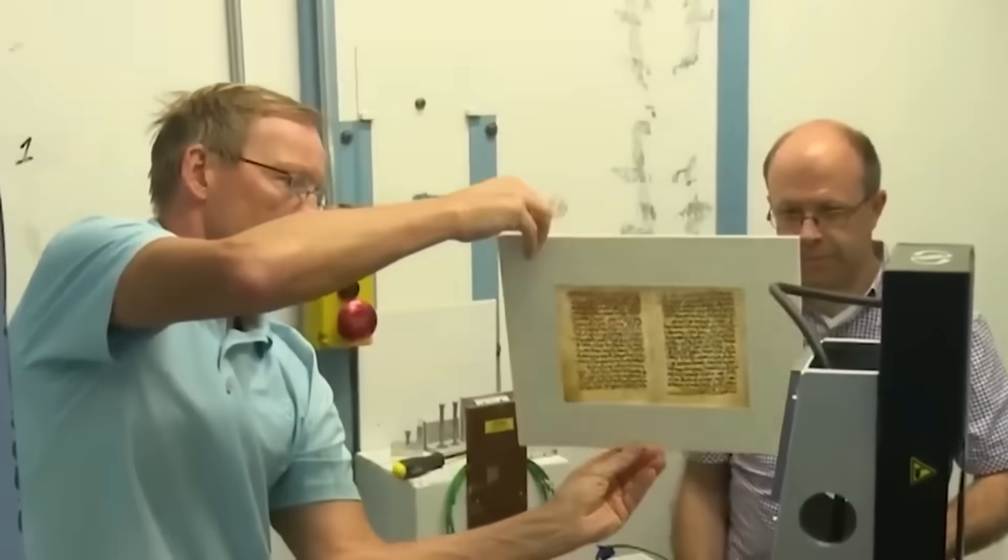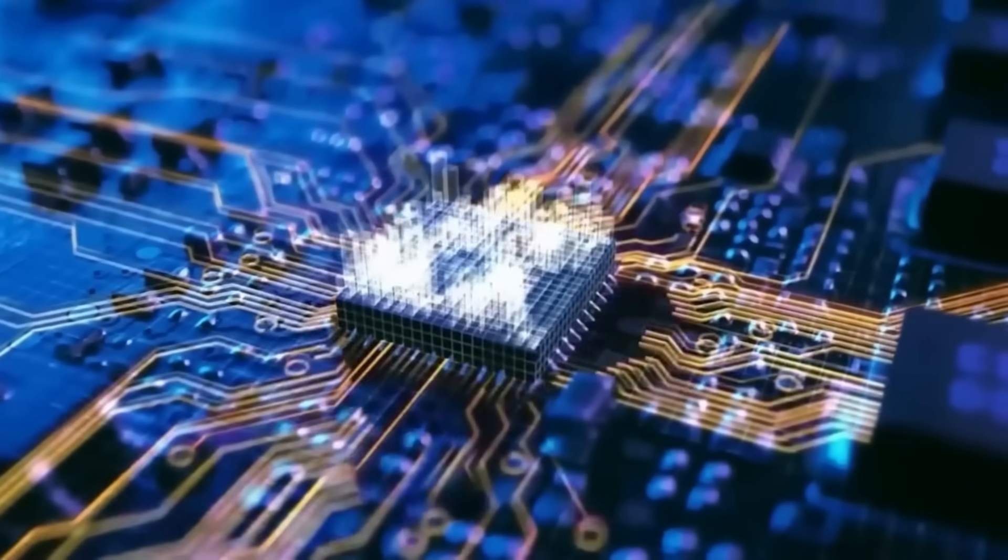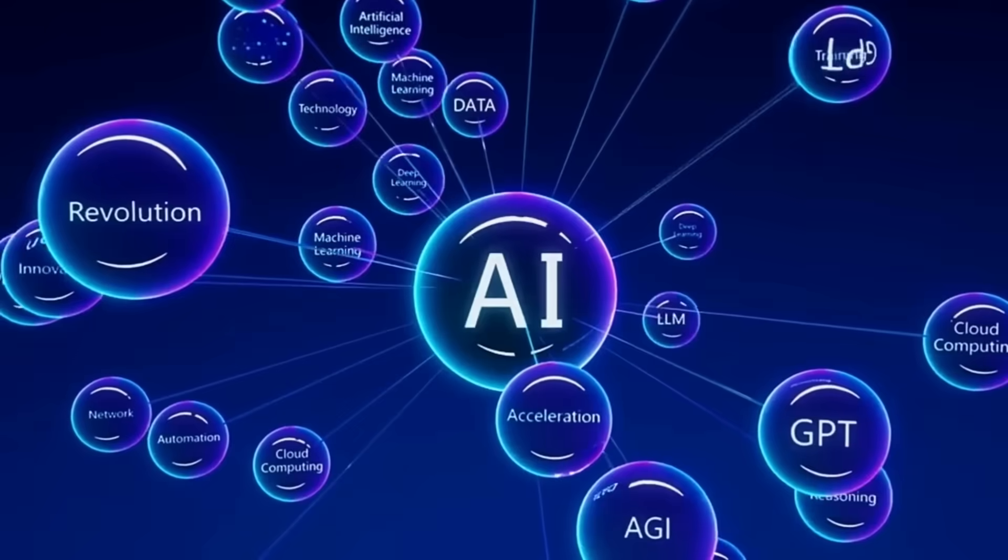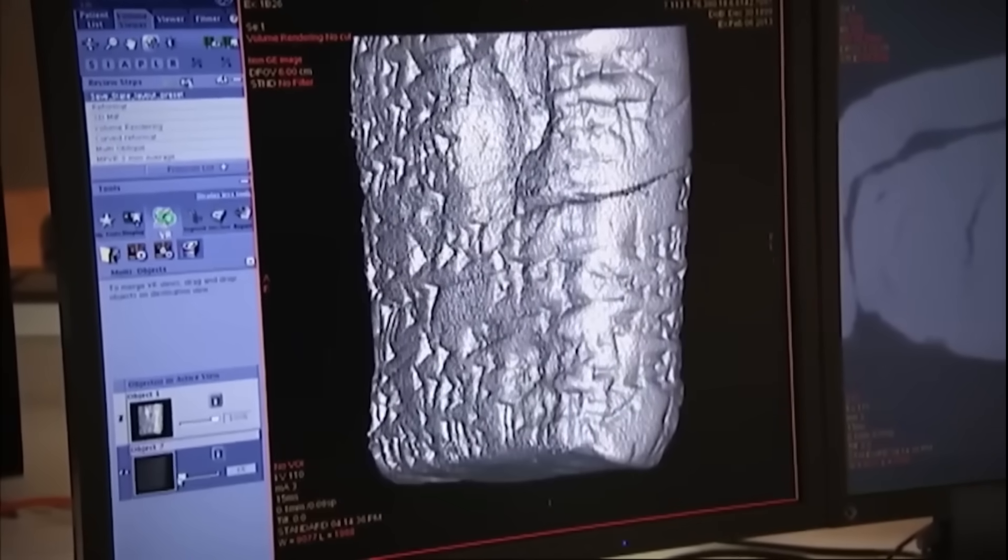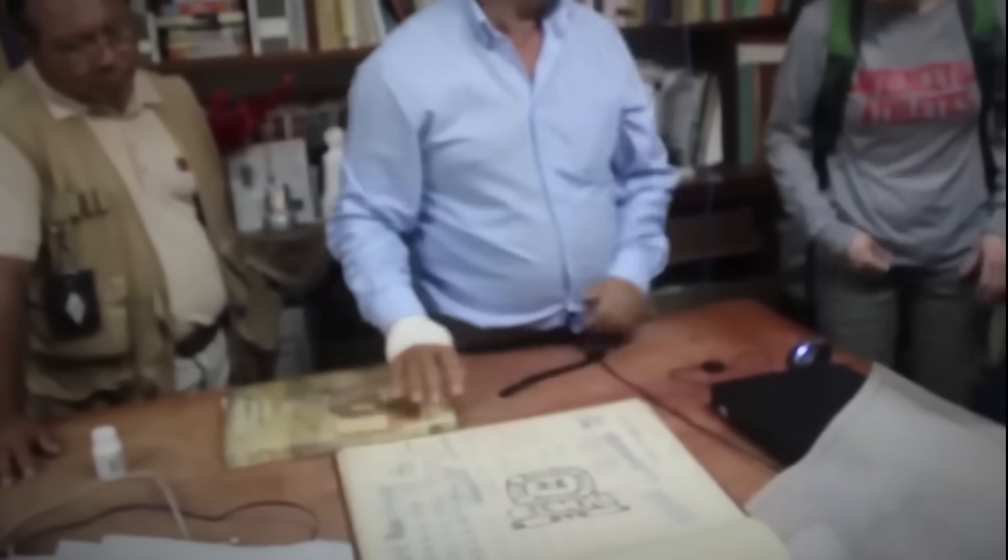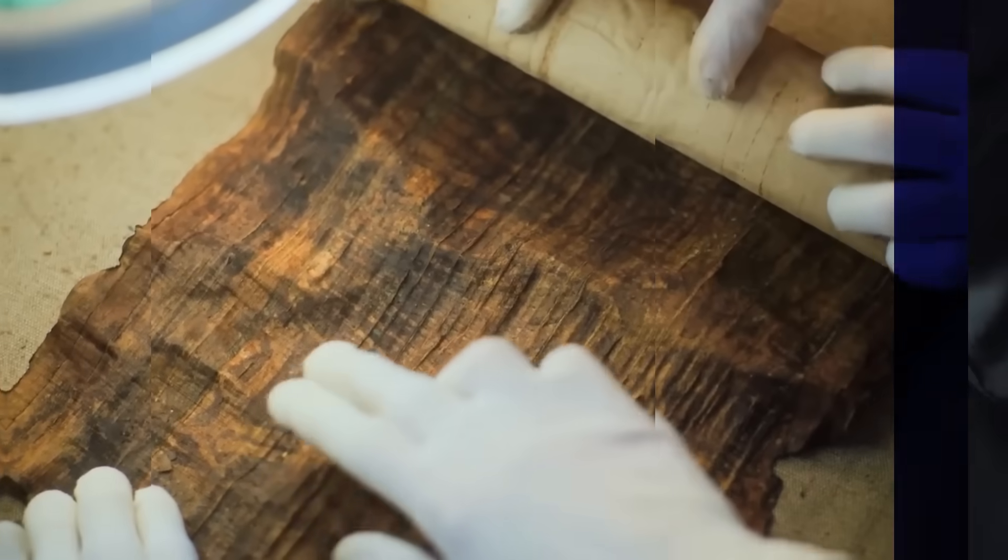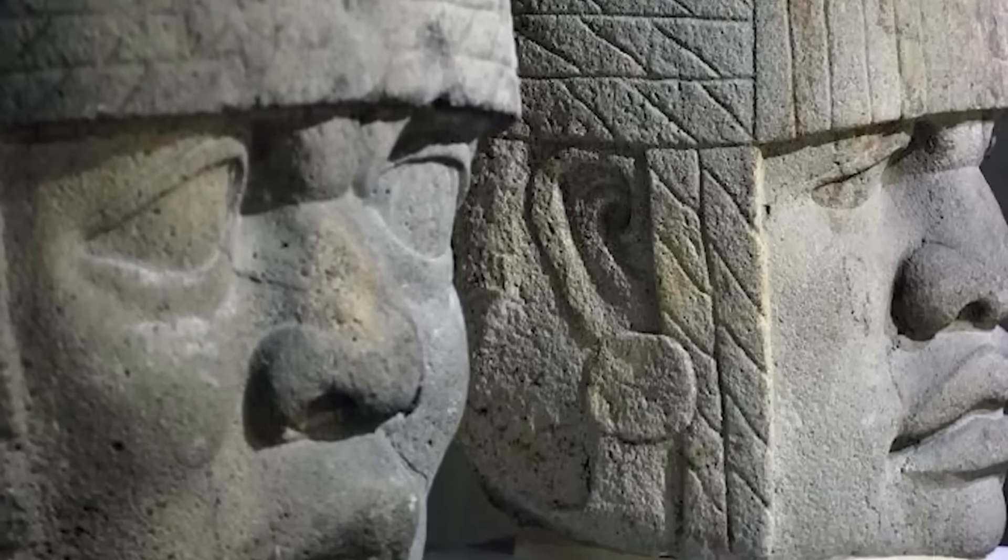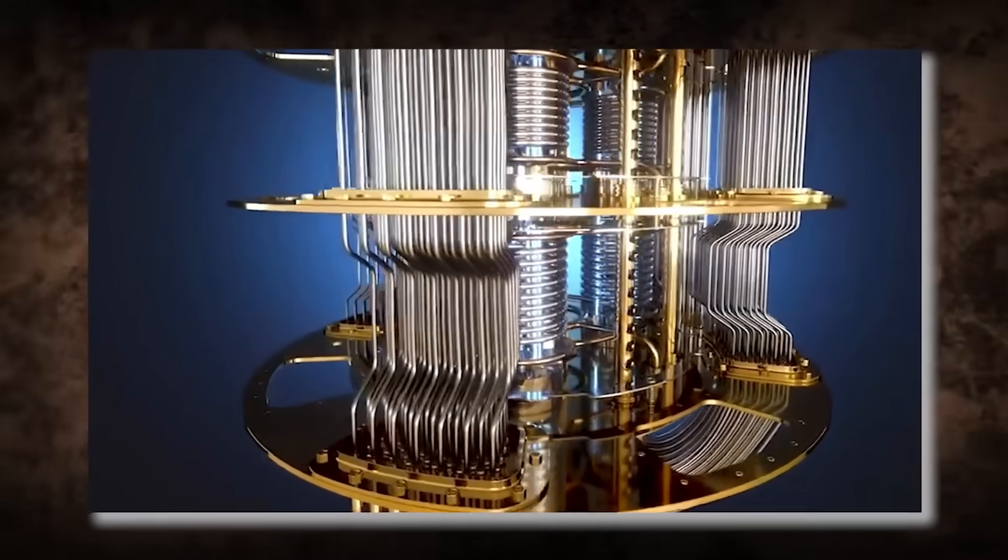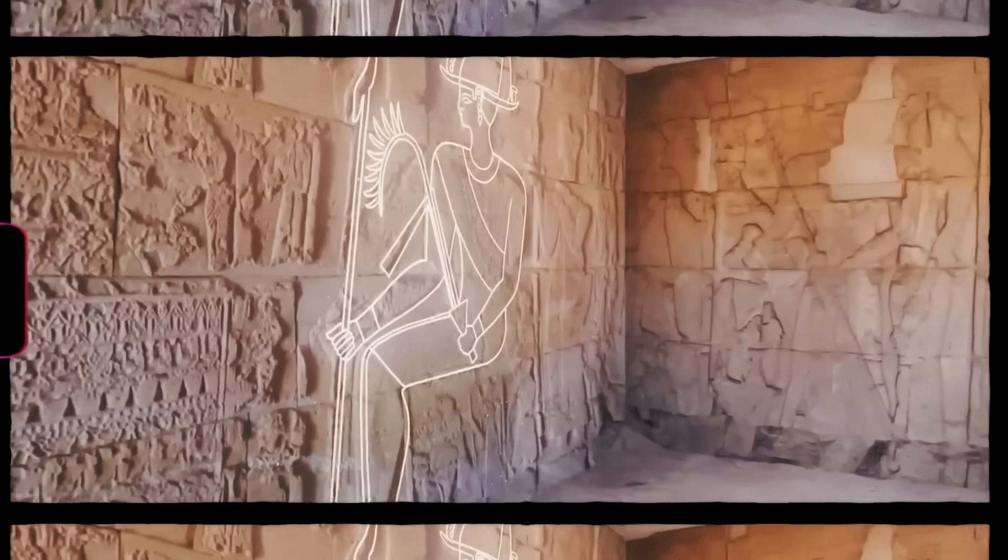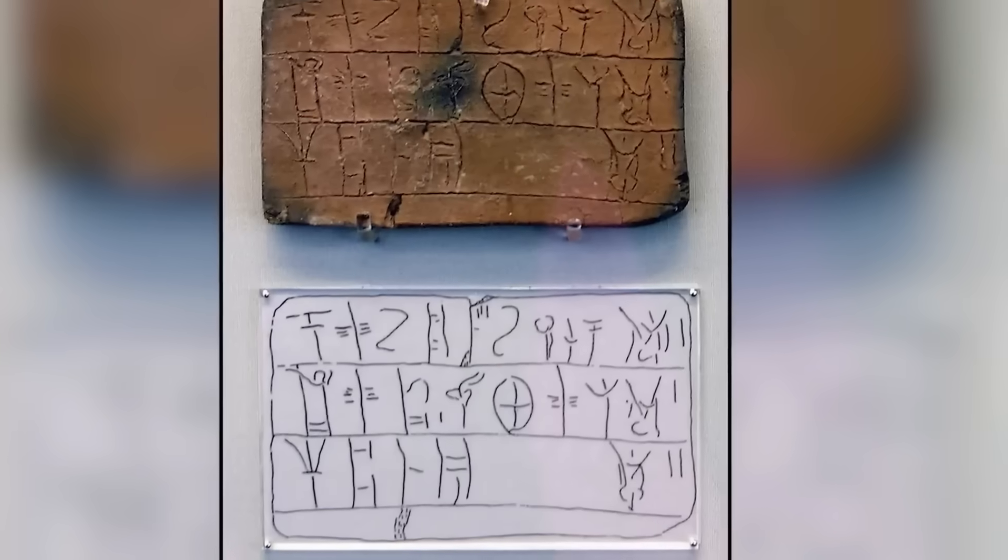Recent reports suggest that when researchers fed these ancient symbols into a quantum powered AI system, something extraordinary happened. The machine didn't just find patterns, it found words, complete sentences. And buried within this ritual text from 900 BCE, it discovered something that shouldn't exist. A message from something that claimed it wasn't human.